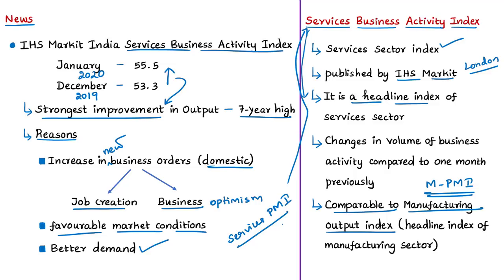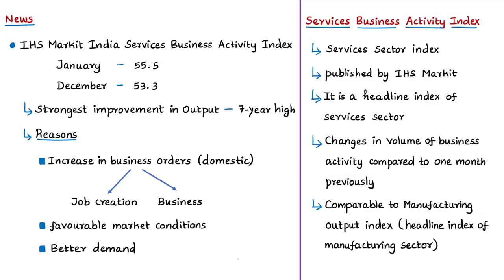The Services Business Activity Index is also sometimes referred to as the Services Purchasing Managers Index (PMI), but unlike the Manufacturing PMI — which is a weighted composite index — the Services PMI is not a weighted composite index. It is a diffusion index, converting different survey responses into a single number. The index is calculated from questions asking respondents about changes in output, employment numbers, and overall volume of business activity for a survey month compared with the previous month.